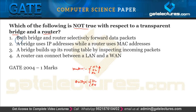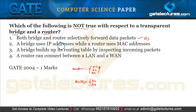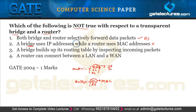Option 1 says both bridge and router selectively forward the data packet — this is true because both can drop a packet not meant to be forwarded. Option 2 says a bridge uses IP addresses while a router uses MAC addresses — this is wrong. A bridge operates at the data link layer and uses MAC addresses, while a router operates at the network layer and uses IP addresses. So option 2 is false.